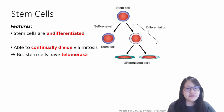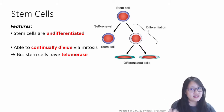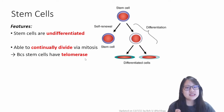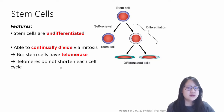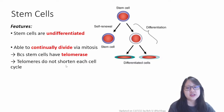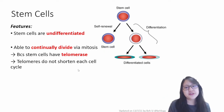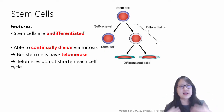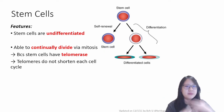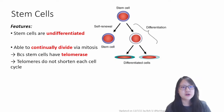Because they have telomerase, which we have learned about last video, and this telomerase enzyme allows telomeres to not shorten after each cycle. If telomeres don't shorten, then the cell can divide many, many times over without stopping.